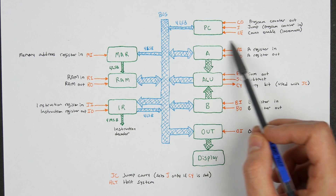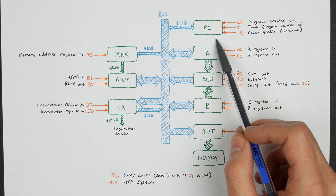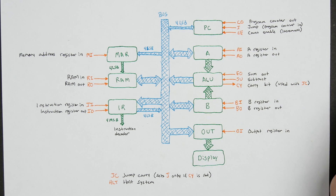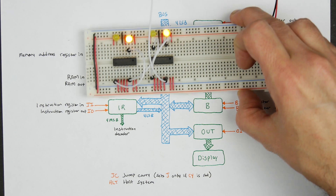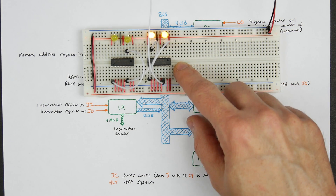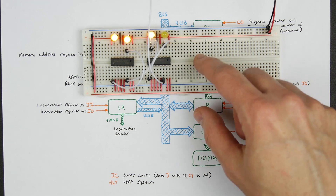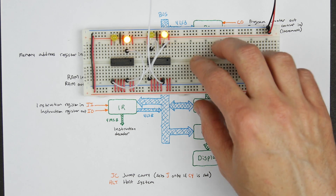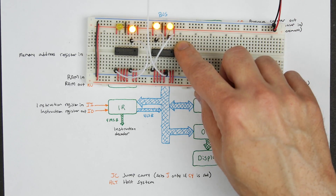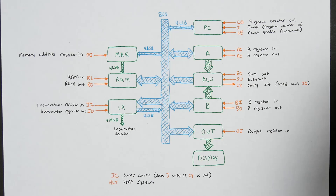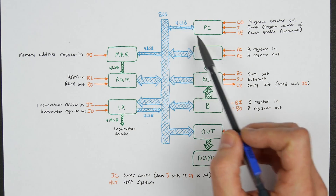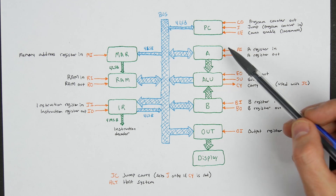In this video I'm going to talk about what the program counter is, how it works, and we'll go ahead and build it. As the name implies, the program counter needs to be able to count. We've seen in previous videos that we can build a binary counter using JK flip-flops. Our program counter is going to be a 4-bit counter, because the memory that we built has a 4-bit address.